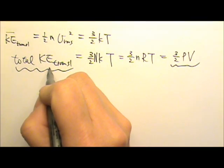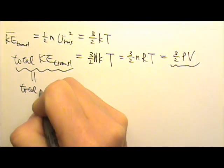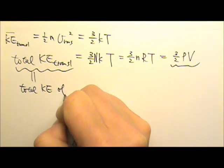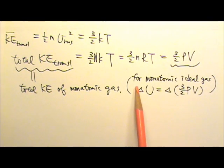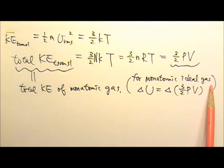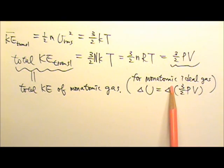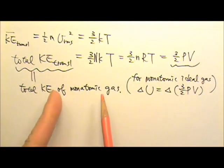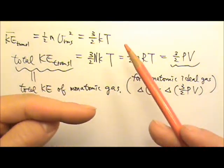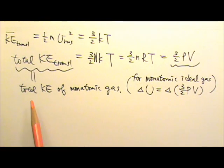So we'll find this useful later on when we work on first law problems. Because the total translational kinetic energy is the total kinetic energy if we're talking about the monatomic ideal gas. So for monatomic ideal gas, we can use delta U equals the change in 3/2 PV. Because a monatomic ideal gas only has translational kinetic energy. Unlike diatomic ideal gas, they can have translational kinetic energy, and they can have vibrational and rotational kinetic energy. So a diatomic ideal gas would have more total kinetic energy than this. However, for monatomic ideal gas, 3/2 PV is all of the kinetic energy a monatomic ideal gas has.